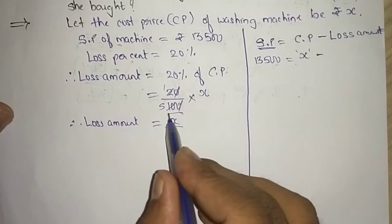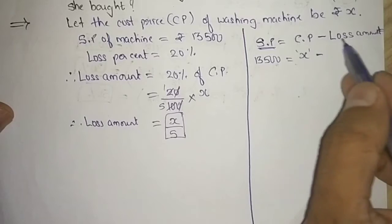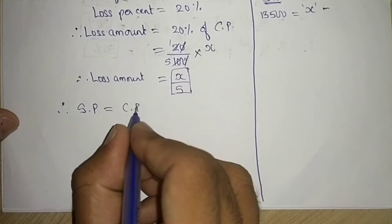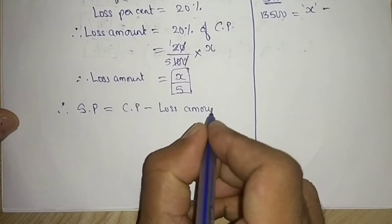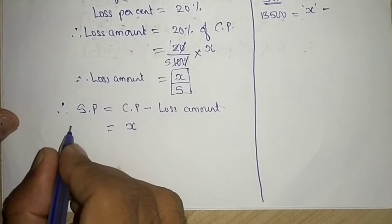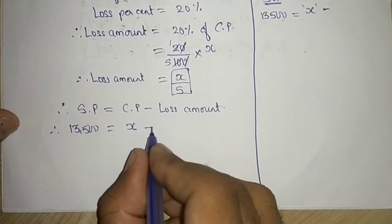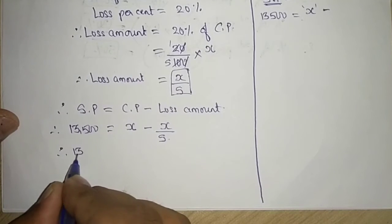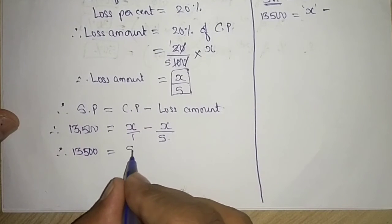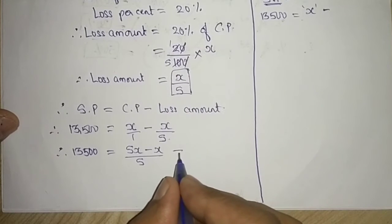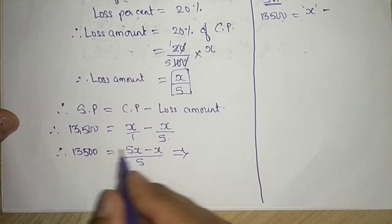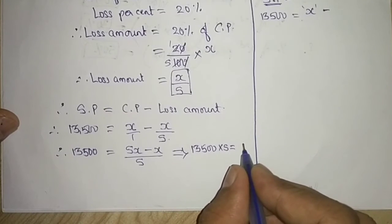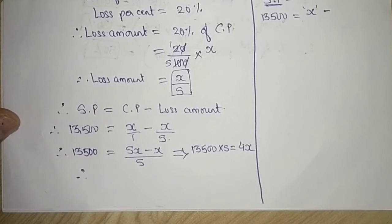I now have the loss amount. Putting it into the equation: selling price equals cost price minus loss amount. So 13,500 equals x minus x divided by 5. Taking LCM on the right side: 13,500 equals 5x minus x, all over 5, which gives 4x over 5.